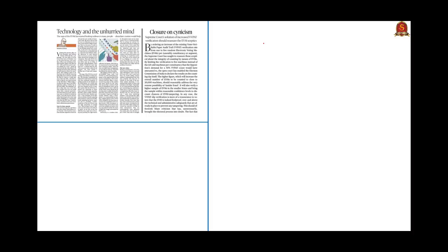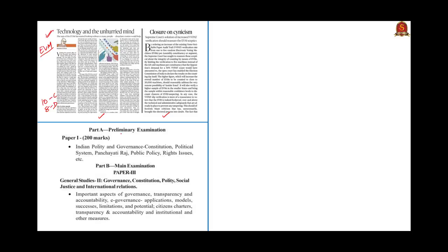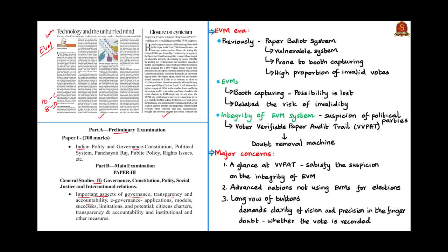Moving on to the next article discussion, which is based on the electronic voting machine. It is highly important today because two editorial articles were based on this topic, which appeared on page number 10 of the Chennai edition and page 8 of the Delhi edition. The aspects of this article can be covered under the UPSC Civil Service Examination syllabus in preliminary examination under Indian polity and governance, and in mains examination under important aspects of governance, transparency and accountability. Stepping into the main discussion, the author focuses on the saga of the EVMs.